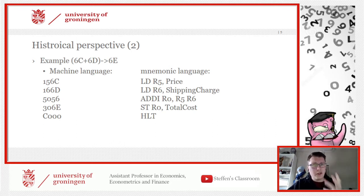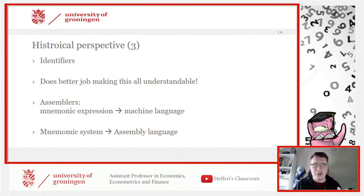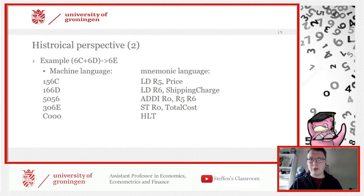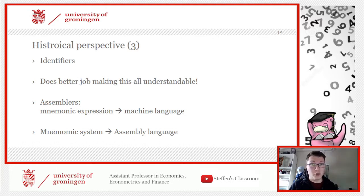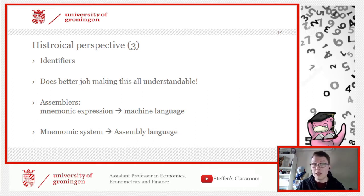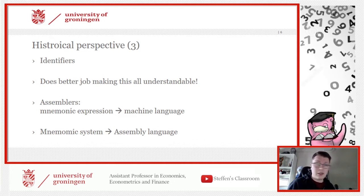These mnemonic languages do a better job of making everything understandable — comparing the two columns, column two is a little more understandable than column one. These mnemonic expressions would then be translated to machine language via assemblers, which are essentially the predecessors to what we know as compilers today. Putting together this system of expressions gives what is known as assembly language.